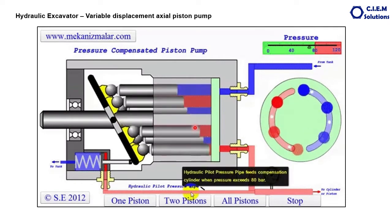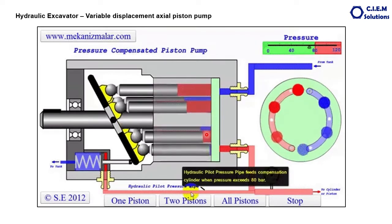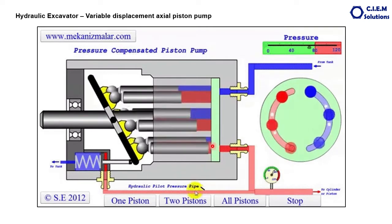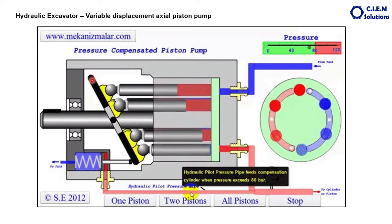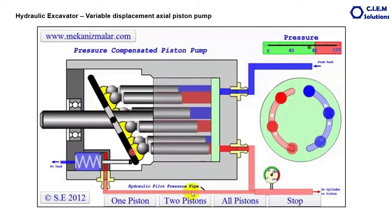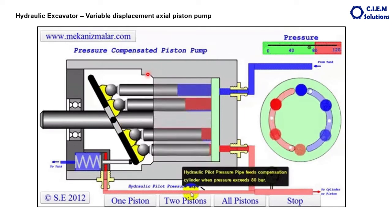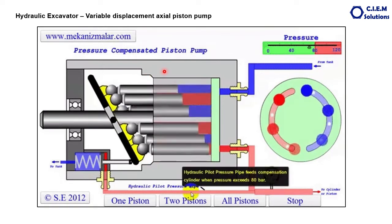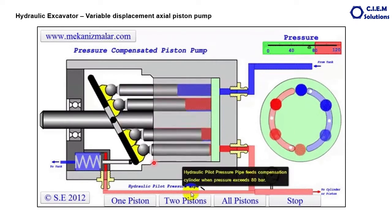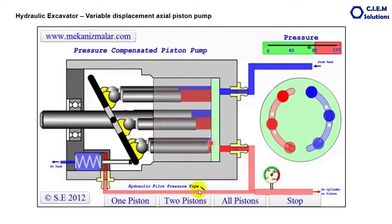Why is it variable displacement? Because the delivery or discharge volume of the fluid varies depending upon the system requirement. This is achieved by the swash plate — the black component — which is arranged at a certain angle to the plane of the cylinder barrel. Because of this angle between the axis of the swash plate surface and the cylinder surface, the pumping action takes place.